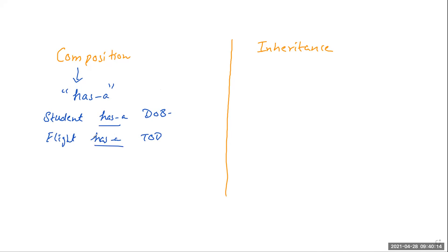In composition, you have multiple classes but with the object of one class as a data member of another class. When you talk of inheritance, it is called an 'is-a' relationship.